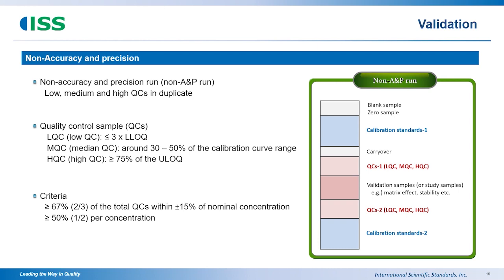For non-AMP run, calibration curve and QC sets of at least three concentrations are required. For AMP run, there are many different validation items where concentration needs to be measured. The accepted range and criteria can be referenced in the guideline.